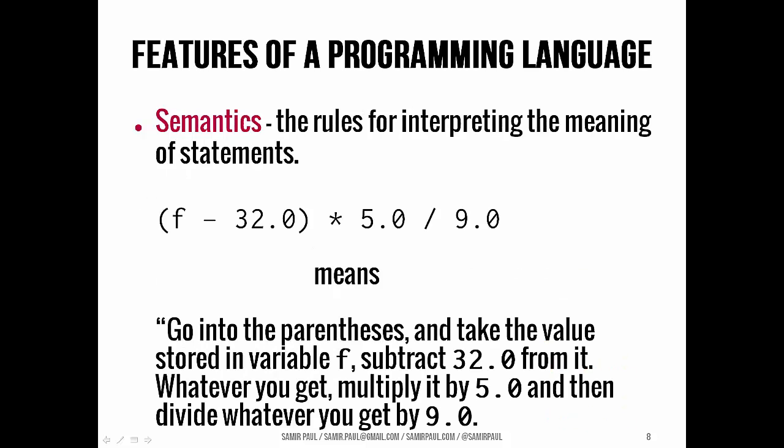So we talked about vocabulary, we talked about syntax. Semantics is the third feature — those are the rules that we use for interpreting the statements. An example here is if you remember this snippet of code from the temperature converter, there are semantic rules that Java follows, and most notably, that's the order of operations.